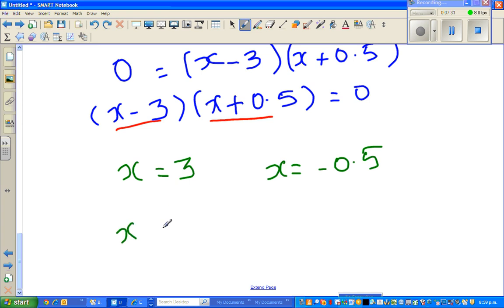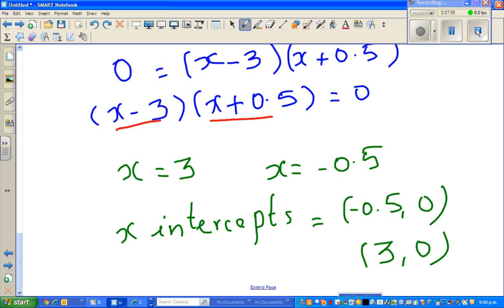So my x-intercepts, let me write as a coordinate. My x-intercepts are, let me write this first. So negative 0.5 comma 0. And the other would be 3 comma 0. So I'll continue this in the next video. Thank you.